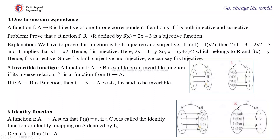Next is the invertible function. A function f from A to B is said to be invertible if its inverse relation is a function from B to A. If you interchange the ordered pairs of f and it is still a function, then we say it is an invertible function. If f is a bijection, then f inverse from B to A exists and f is said to be invertible.